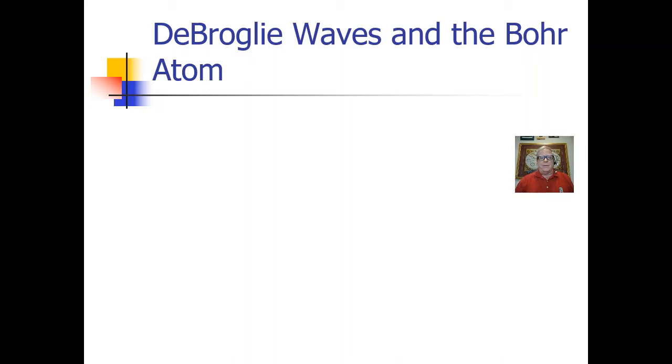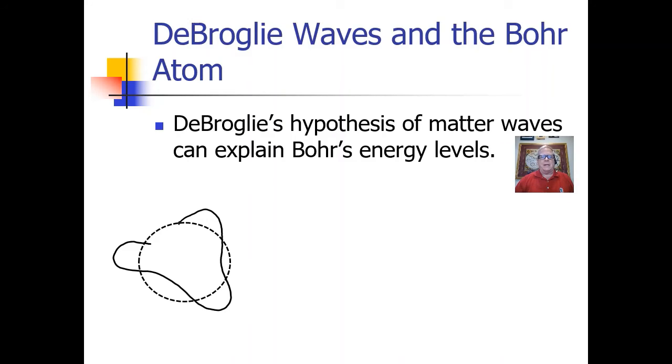So here's another view of that same idea. De Broglie's hypothesis was that matter particles like the electron had a wavelength.